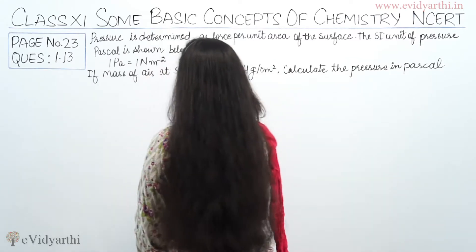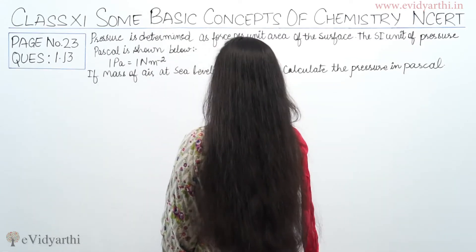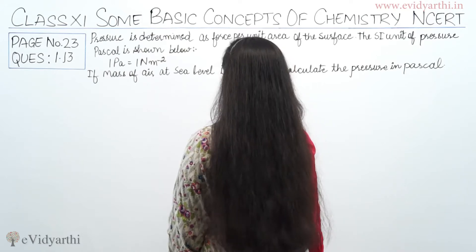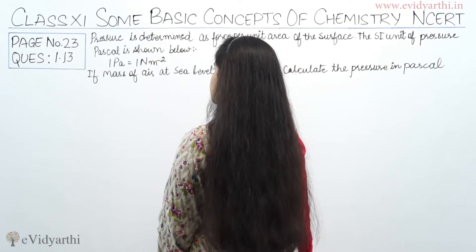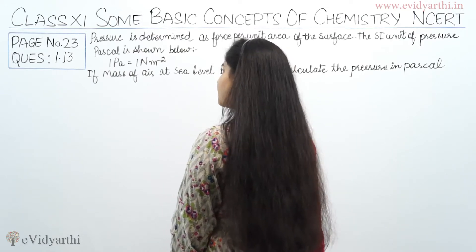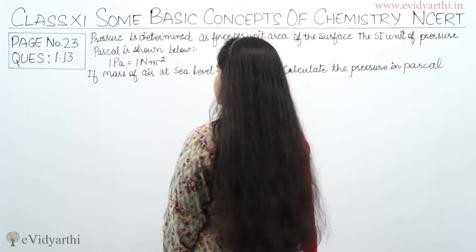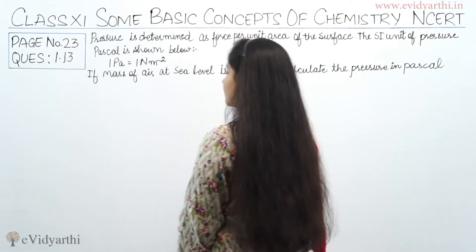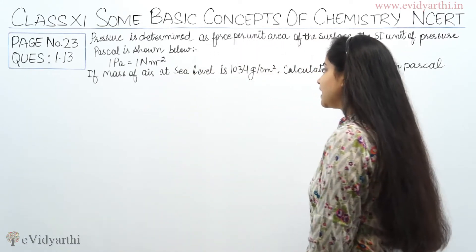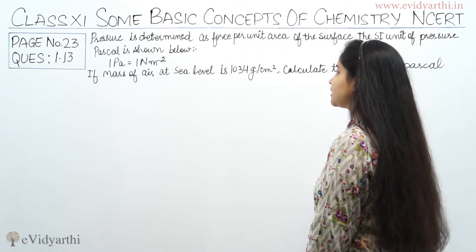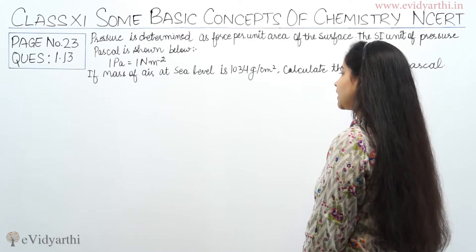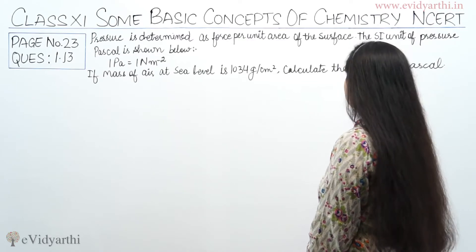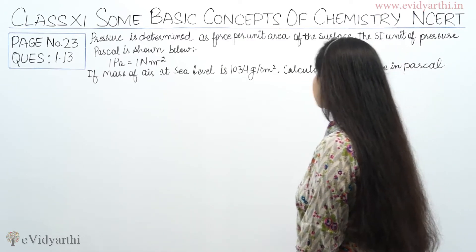Pressure is determined as force per unit area of the surface. The SI unit of pressure, Pascal, is shown below: 1 Pascal is equal to 1 Newton per meter square. If the mass of air at sea level is 1034 gram per centimeter square, calculate the pressure in Pascal.